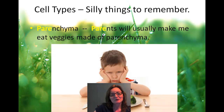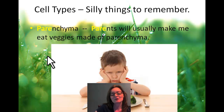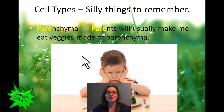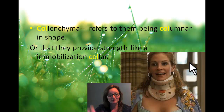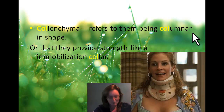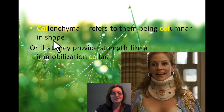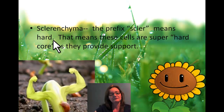Here are some memory aids for these terms. For parenchyma, think of it like 'parents' — parents make you eat vegetables made of parenchyma, so remember that parenchyma is the food-storing cell. For colenchyma, remember that the cells are columnar in shape and provide strength — like an immobilization collar providing strength to the neck after an injury, as seen in the film Erin Brockovich.